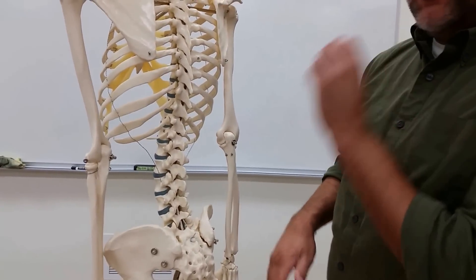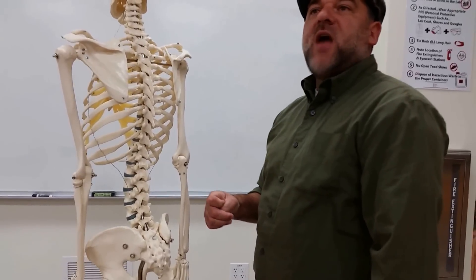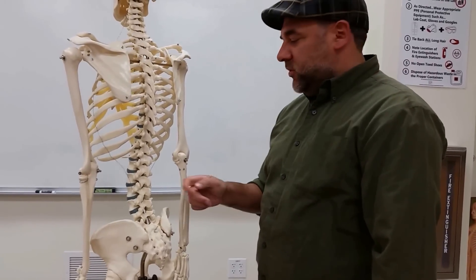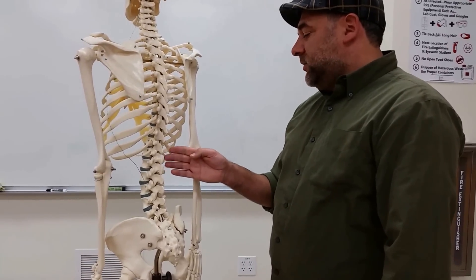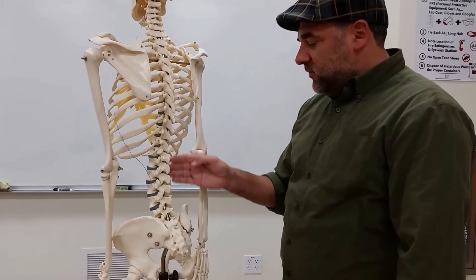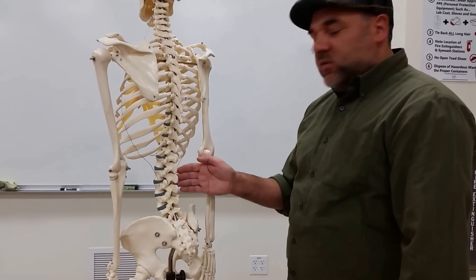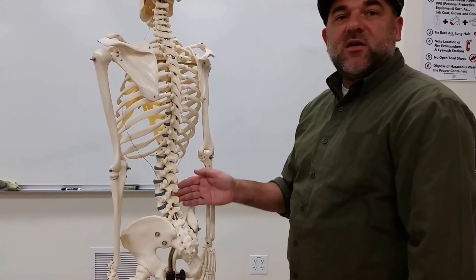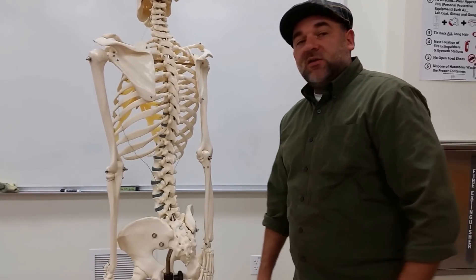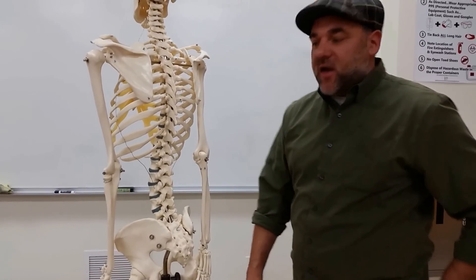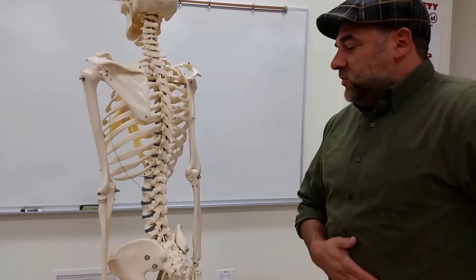But there is a fourth one people usually don't talk about, which is hypo-lordosis, where what happens is, instead of having a curve there, you lose that curve, and that does cause a lot of back pain, especially for young athletes who are trying to be too straight.